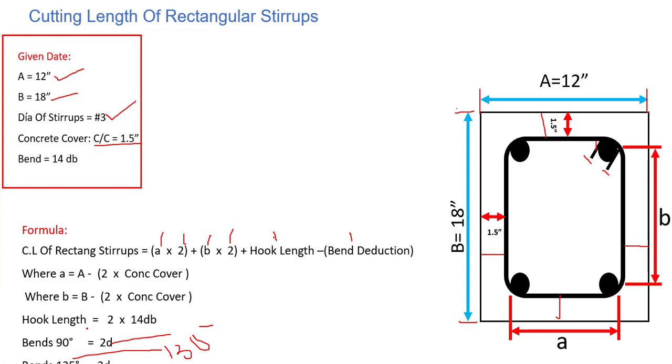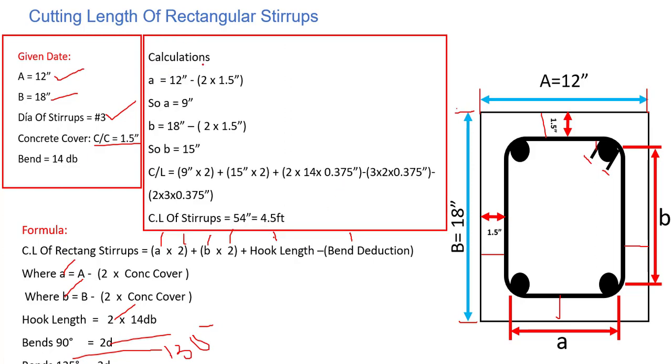This is basically the data. We will put all of this data - A, B, hook length, and bend deduction - into the formula. Let's do the calculation. Small a equals large A, 12 inches, minus 2 times the concrete cover, so a equals 9 inches. And b equals 18 inches minus 2 times the concrete cover, so b becomes 15 inches.